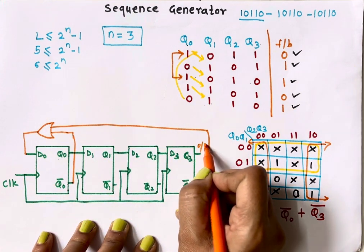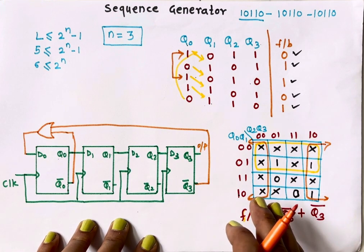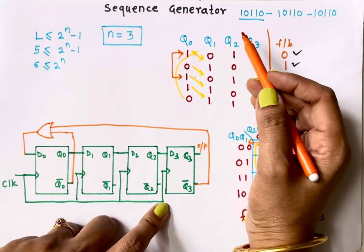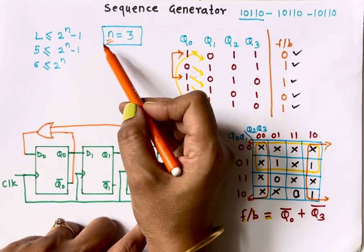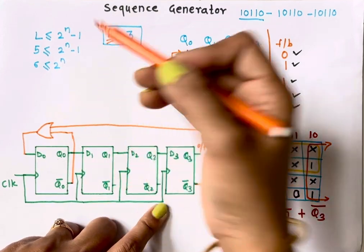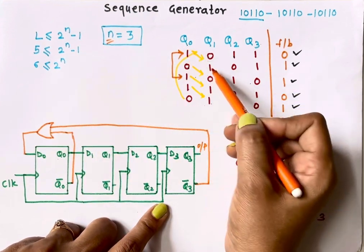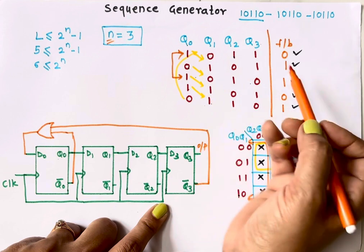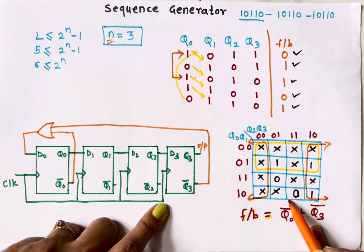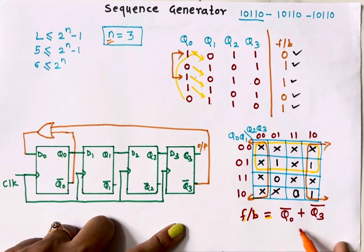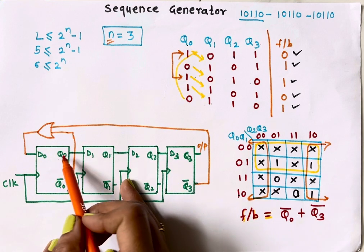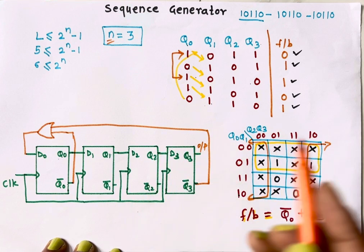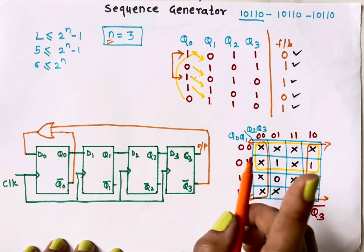To summarize: a sequence generator is a sequential circuit requiring flip-flops. First, identify the minimum number of flip-flops using the formula. Write and shift your sequence, then check whether any states are repeated. If so, add more flip-flops until all states are unique. Then draw a K-map to find the feedback equation for the first flip-flop input. Applications include pattern generation, pseudo-random sequence generation, data scrambling, encoding, test pattern generation, and use in VLSI.